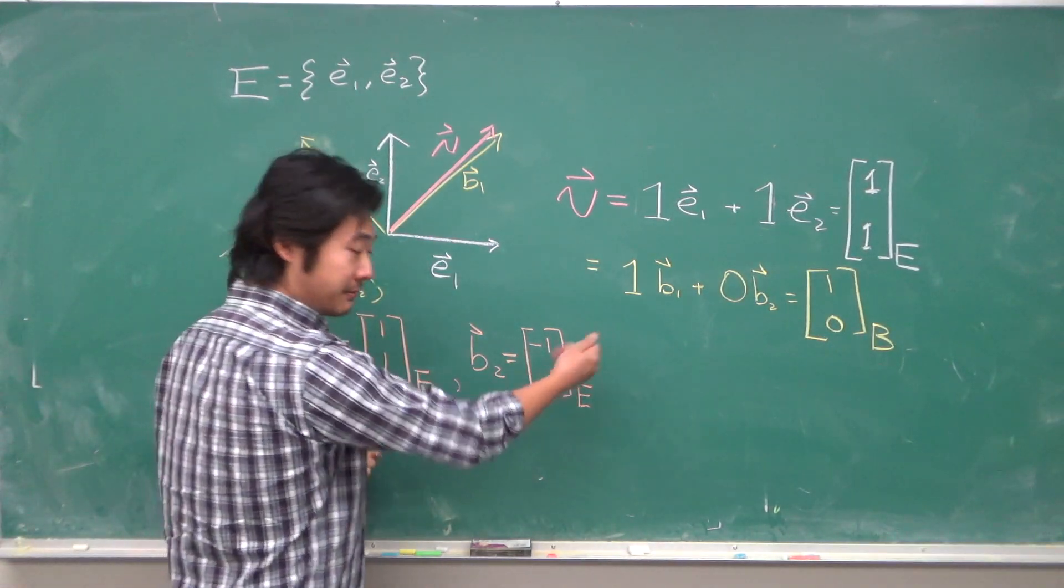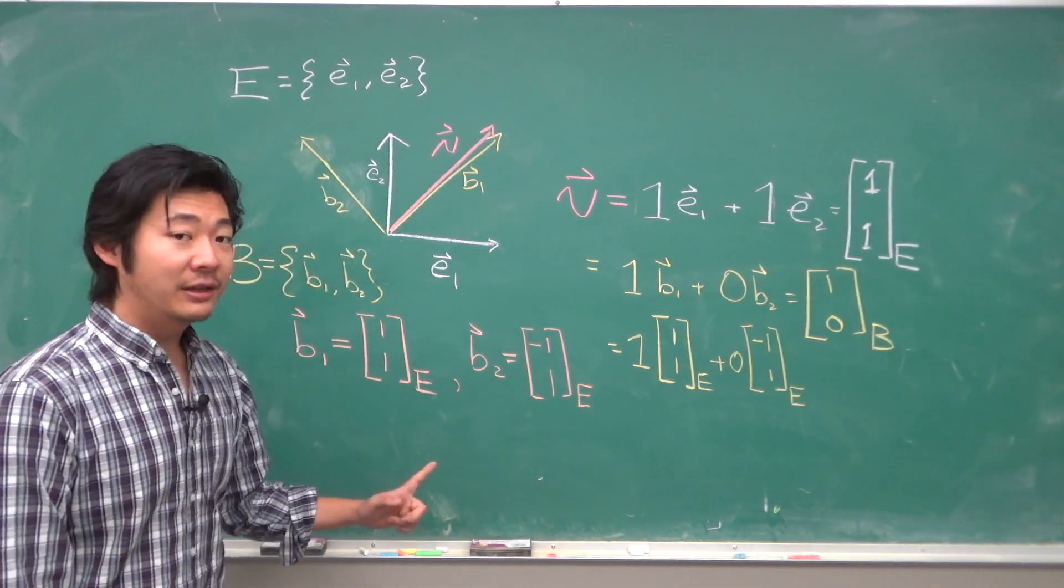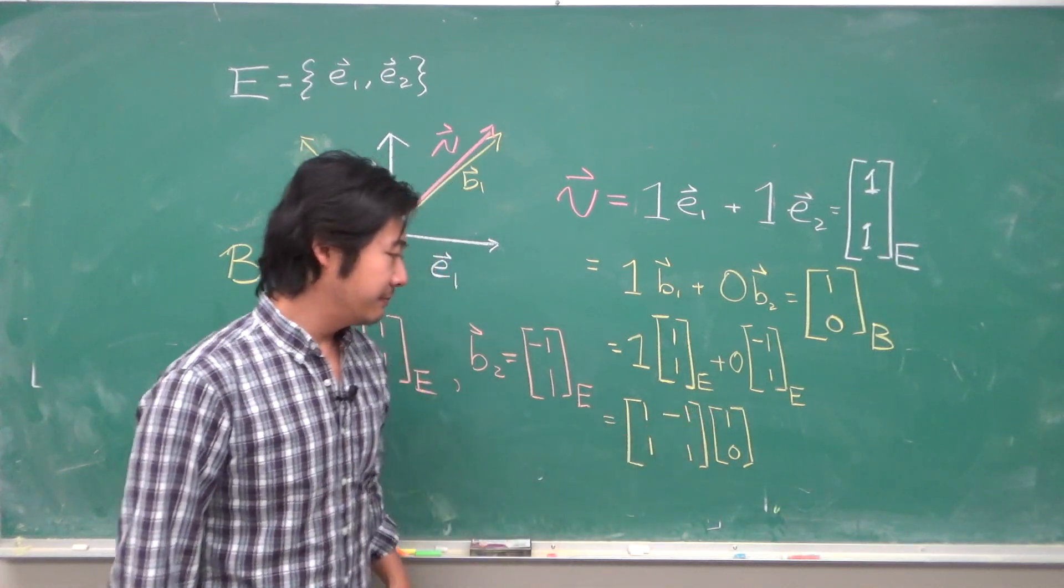So now, let's substitute this in. So, we get some expression like this. Now, notice that we can rewrite this as a matrix equation. 1, negative 1, 1, 1, times 1, 0.